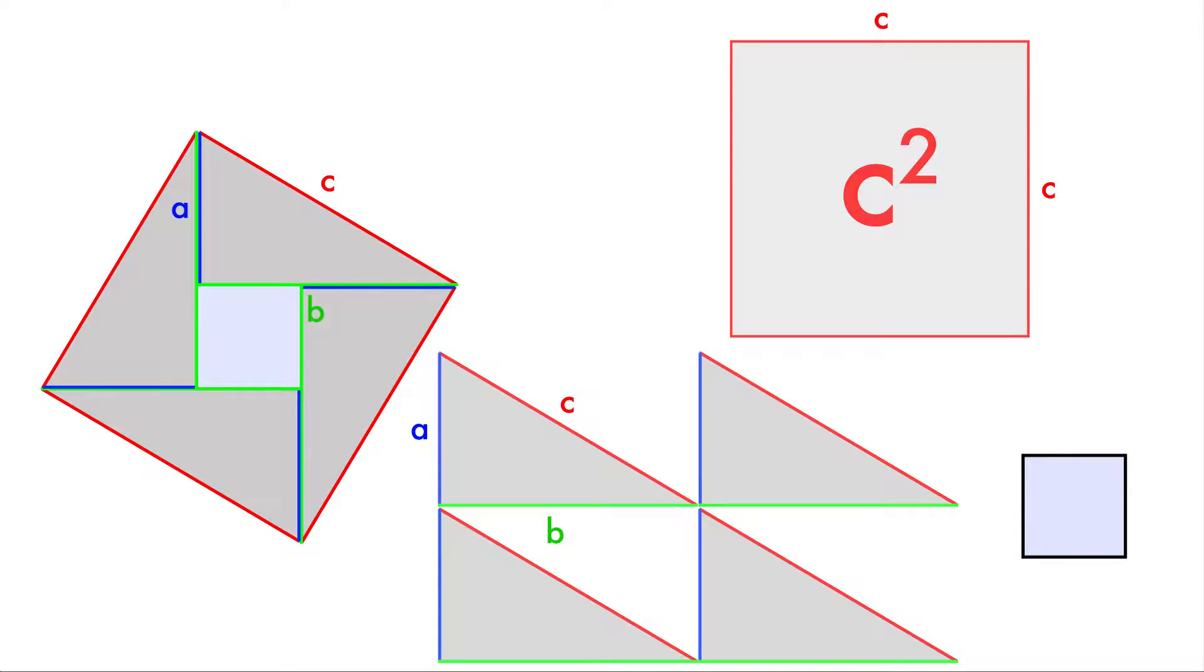So calculating the area of the triangles, that's actually pretty easy. We know for any triangle, the area of a triangle is one-half base times height. So we can go ahead and plug that in. So the triangle becomes one-half. The base of the triangle, we were calling that b. The height of the triangle, we were calling that a.